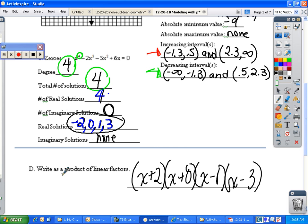When you want to write a product of linear factors, you just basically take those solutions and put them right down into linear factors. So, x plus 2, x plus 0, which is just x, x minus 1, and x minus 3.